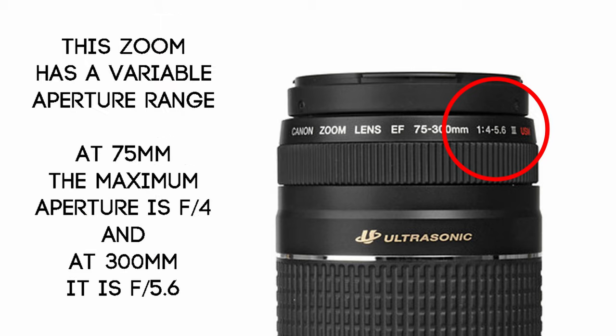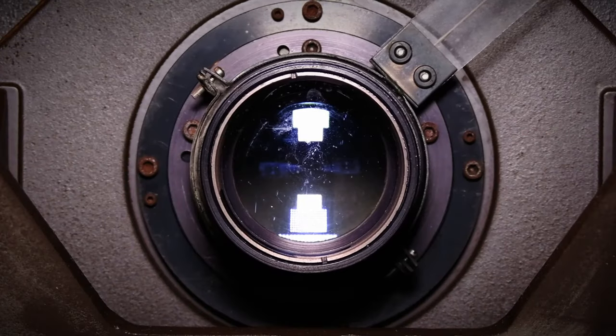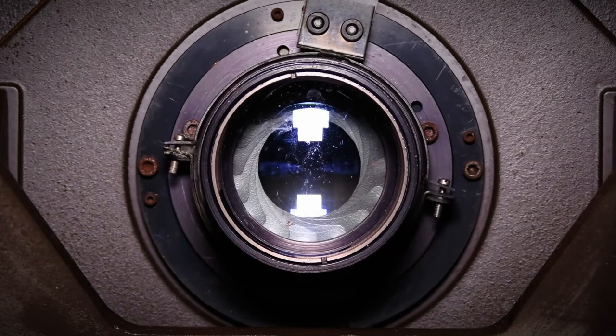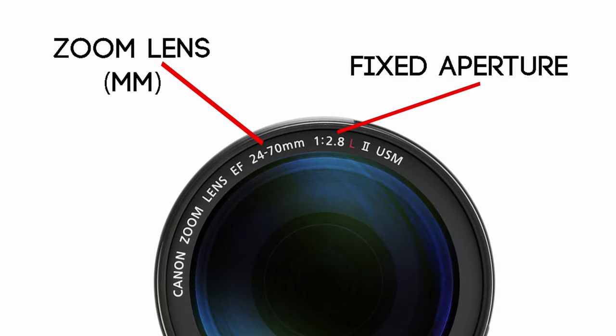This is a variable aperture, and it tells you the maximum apertures at the shortest and longest focal lengths. These numbers may also appear with the F, without the F, or as a ratio. With a variable aperture, the more you zoom, the narrower the aperture becomes. There are some zoom lenses that have fixed apertures, but these will be more expensive.